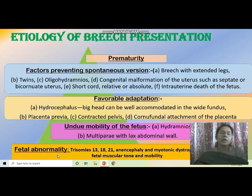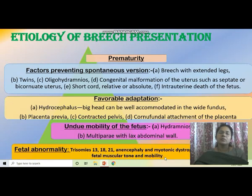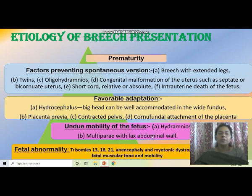Fetal abnormality as a cause includes trisomy 13, 18, 21, anencephaly, and myotonic dystrophy due to alteration of fetal muscular tone and mobility. These are the etiologies of breech presentation: prematurity, factors preventing spontaneous version, favorable adaptation, undue mobility of the fetus, and fetal abnormality.